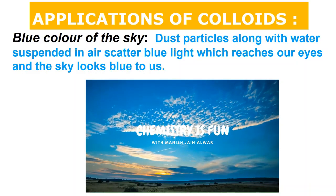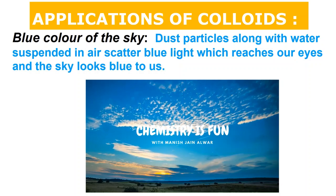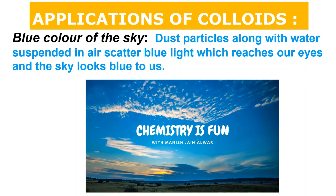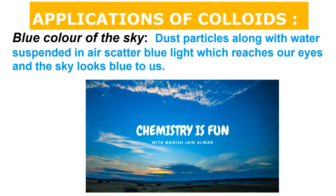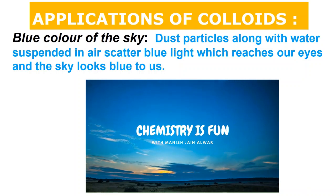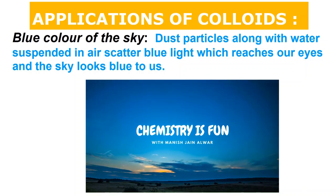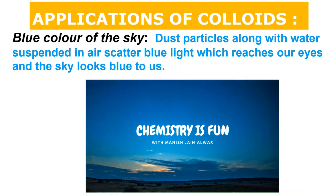The most important example we see around us is the blue color of the sky. Dust particles along with water suspended in air scatter blue light, which reaches our eyes and the sky looks blue to us. So the blue color comes from dust particles along with water suspended in air which scatter blue light from white light.